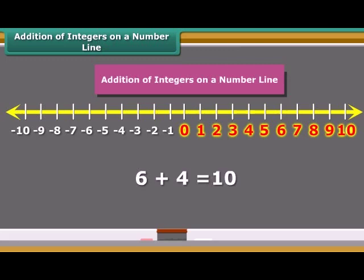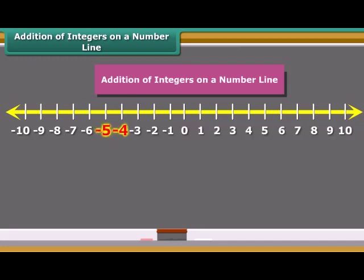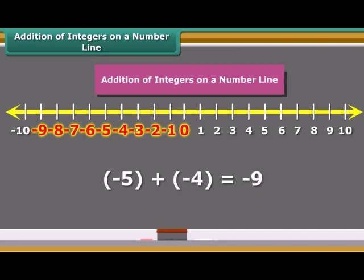Let us add two negative numbers, minus 5 and minus 4 on the number line. In this case, first we move five steps to the left of 0, reaching minus 5, and then we move four steps to the left of minus 5 and reach minus 9. So we see, when we add two positive integers, their sum is a positive integer. When we add two negative integers, their sum is a negative integer.